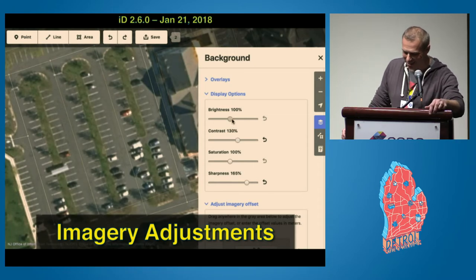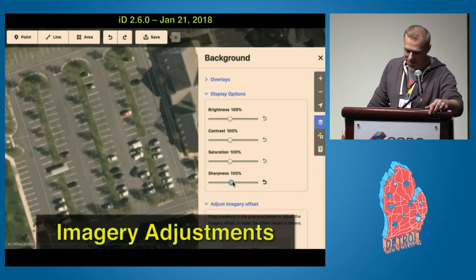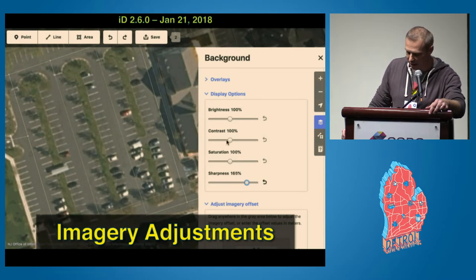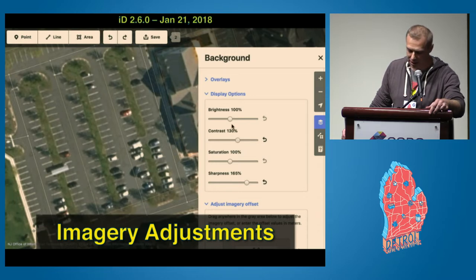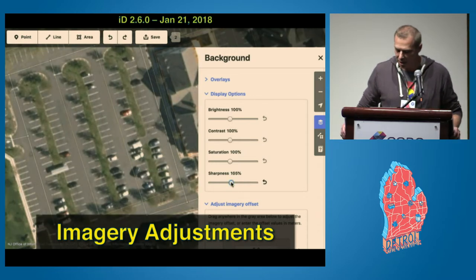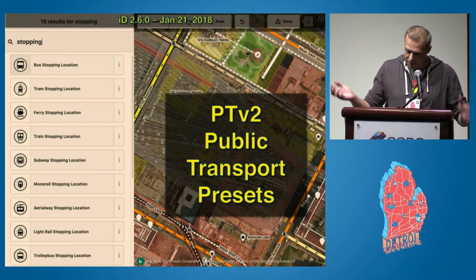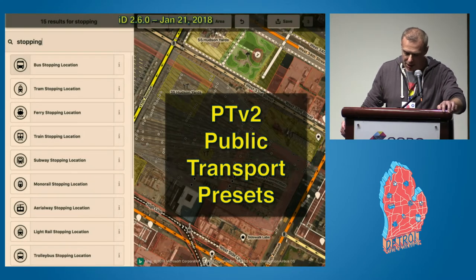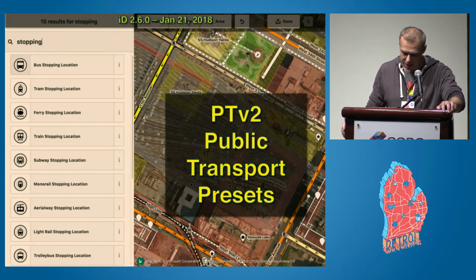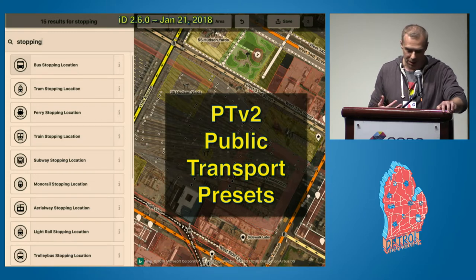Moving on to January of this year, version 2.6. This release included some brand new tricks to let mappers enhance the background imagery — you can crank up the brightness or contrast, adjust the saturation, even sharpen the imagery a little bit. This one is both useful and kind of fun to play with. Also in version 2.6 we upgraded a bunch of the presets for public transportation, public transport V2. Check out these icons on the side — you can see that we do our best to let mappers add stop locations, platforms, and things like that.